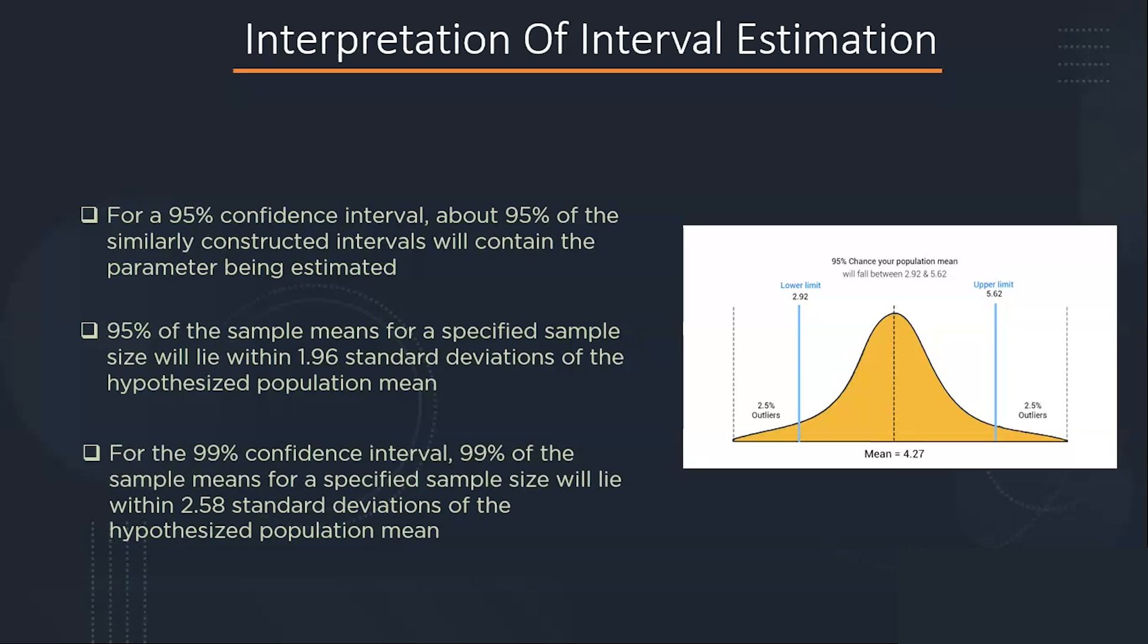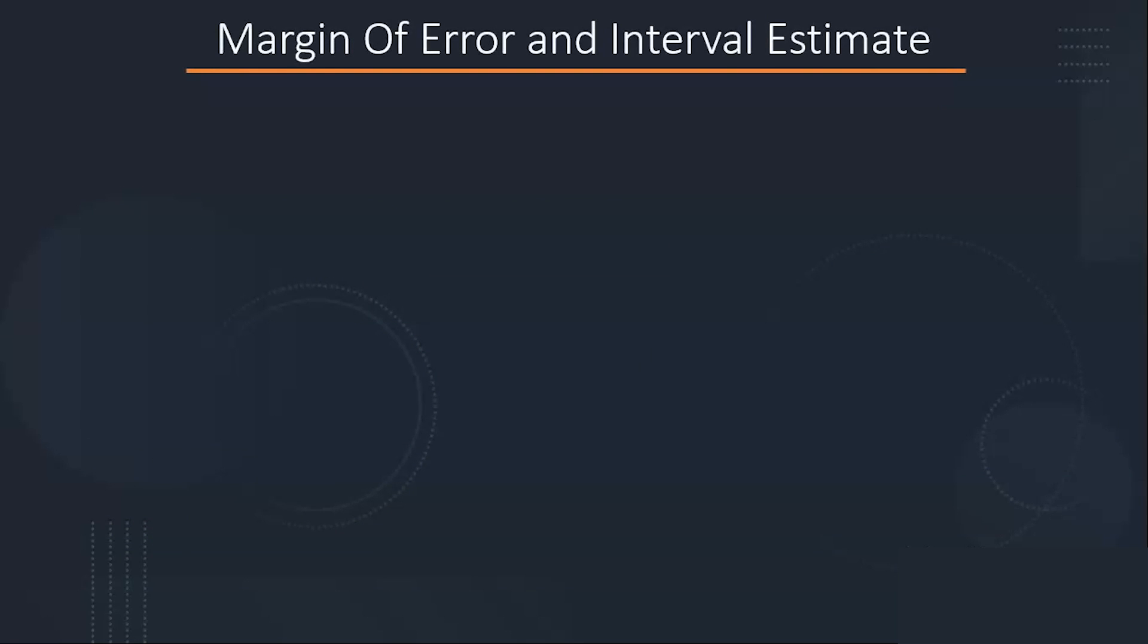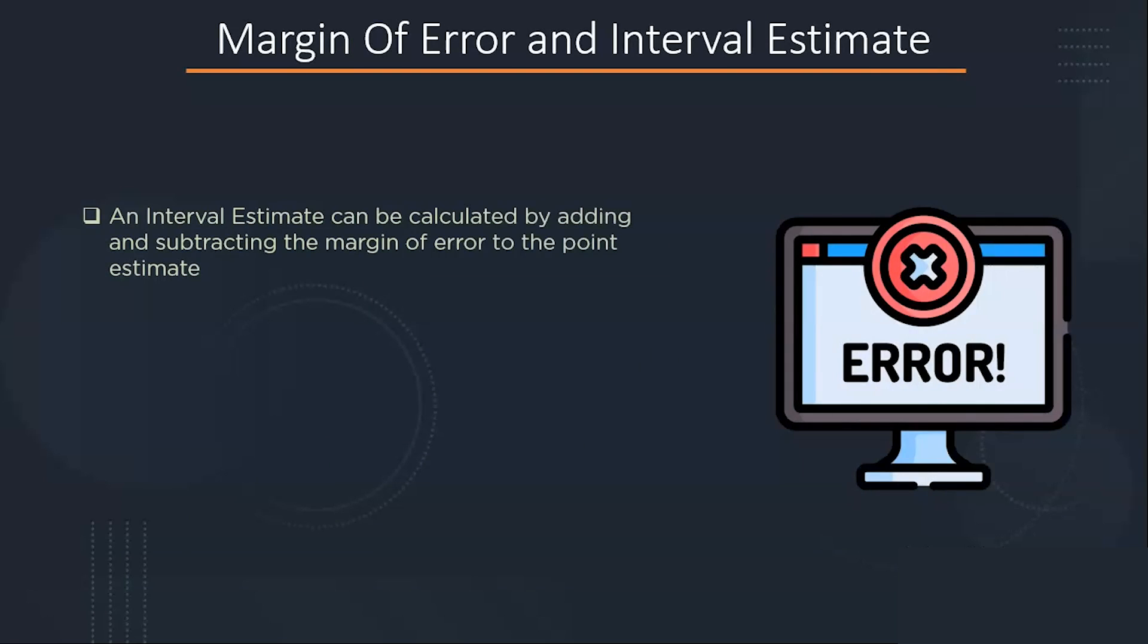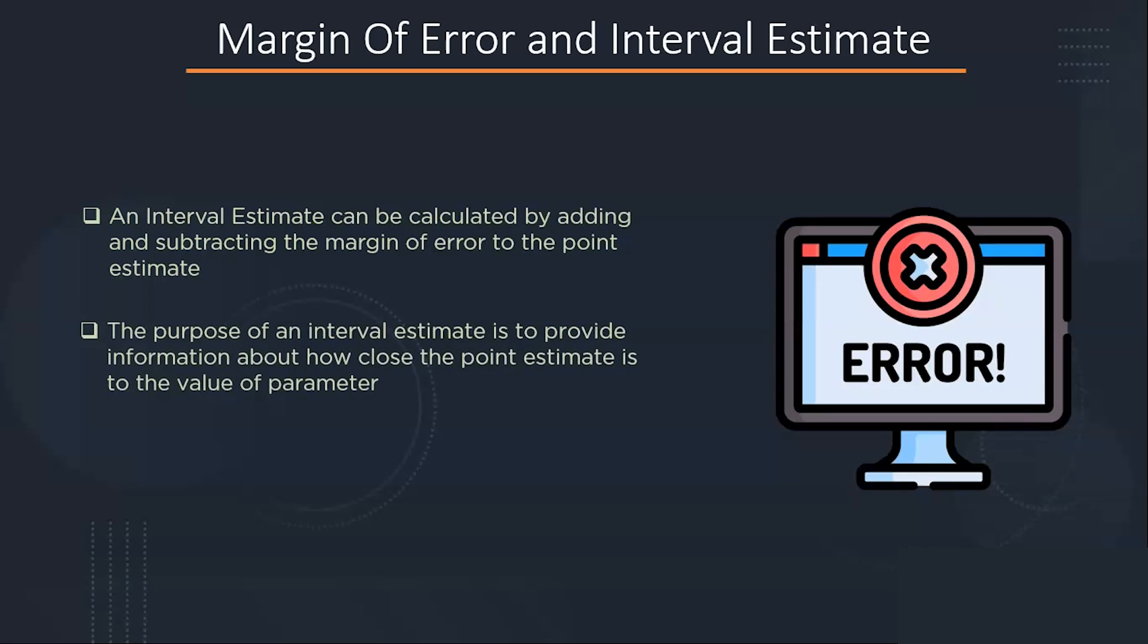Now let's see how you can calculate the interval estimates. The interval estimate can be calculated by adding and subtracting the margin of error to the point estimate. It gives us the idea of how close the point estimate is to the value of parameter.